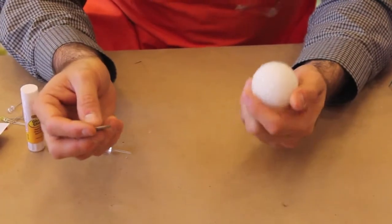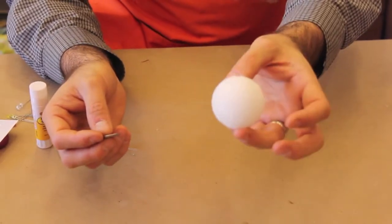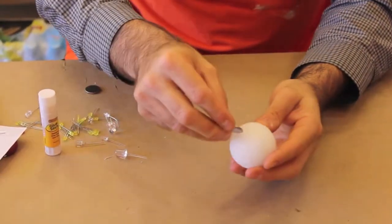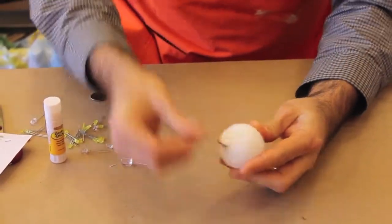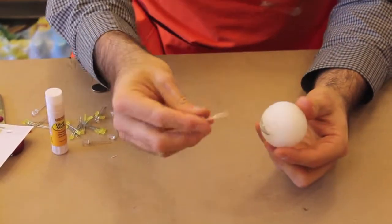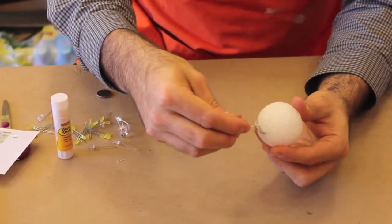We like to start with sculpture and a dollar store foam ball, a coin cell battery. Push them together and then connect the positive and the negative to the right place.